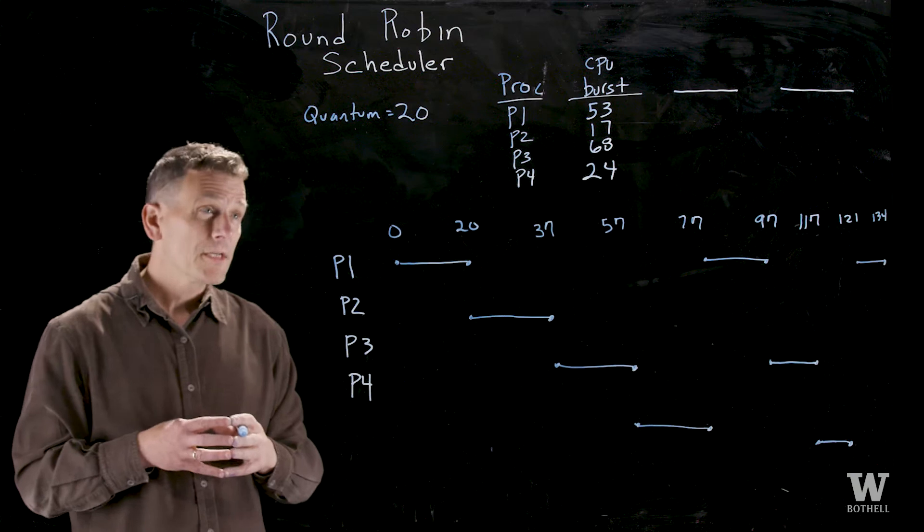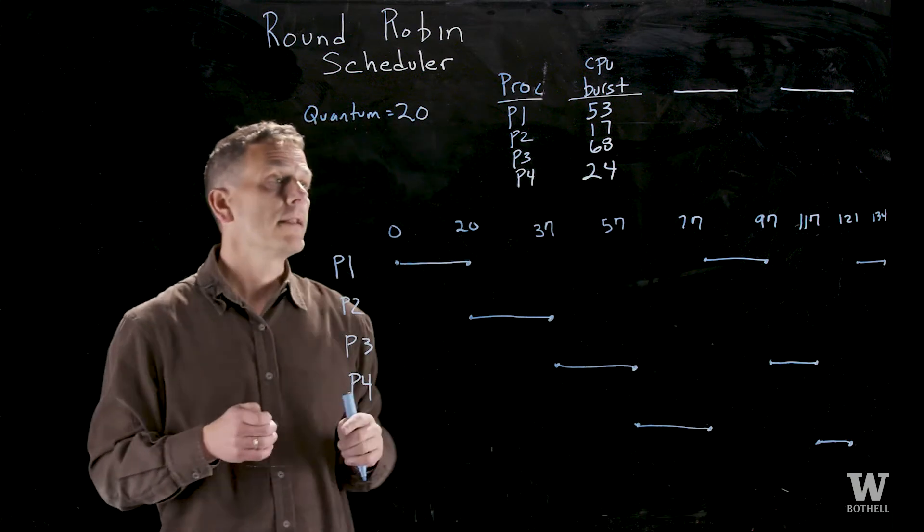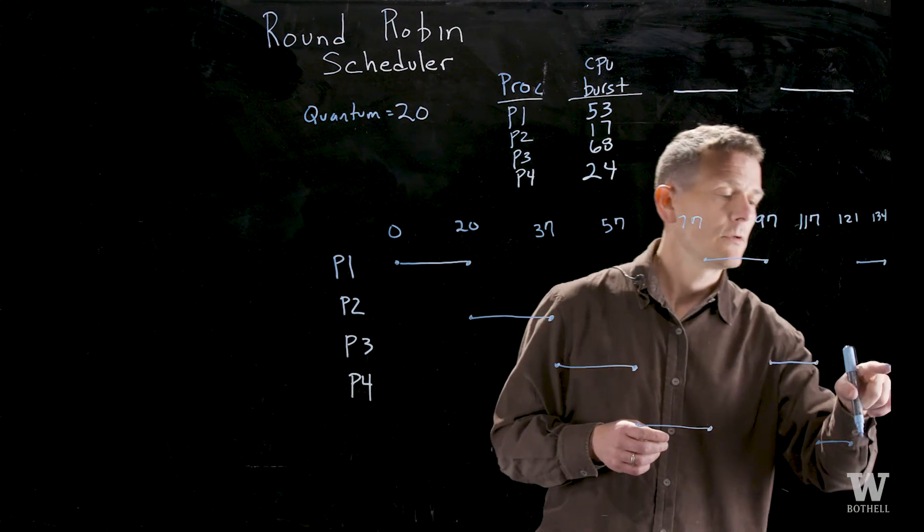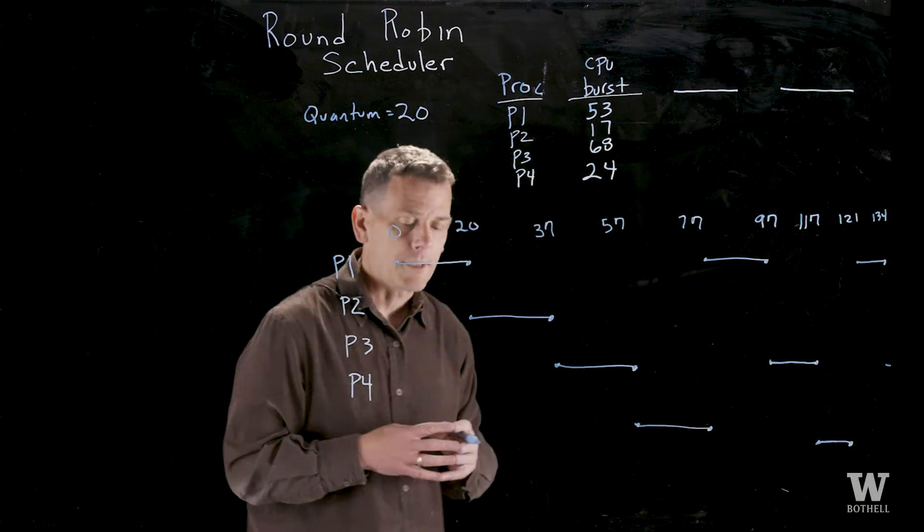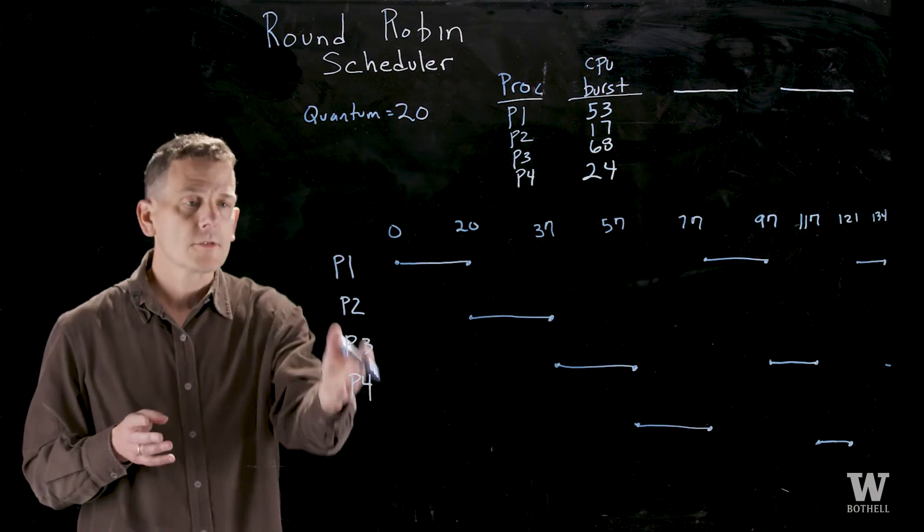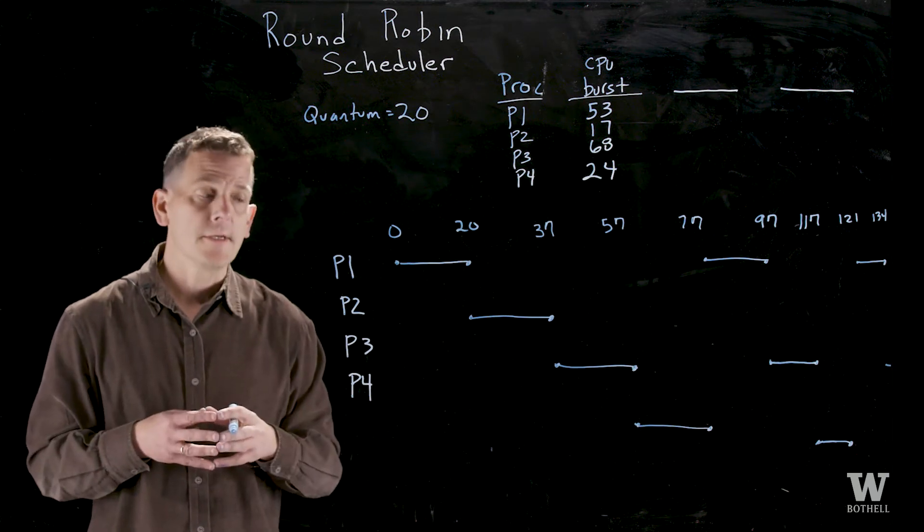It looks like all processes have finished except for process 3 which has run 40 milliseconds and has 28 left. It will take the last time until it finishes, so just assume that finishes where it does. Notice this algorithm is fair across all the processes. No process is given priority and they each get the same time quantum if they need it.